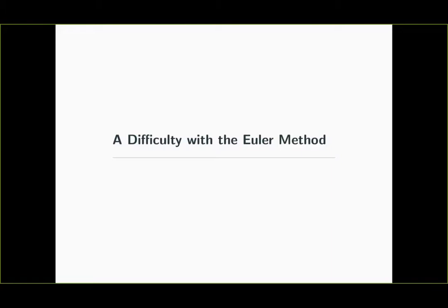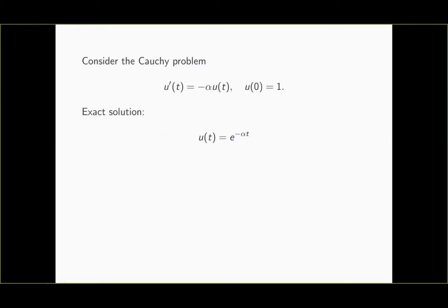However, in this video we're going to take a look at another model problem which looks again very simple, but where the Euler method actually performs rather badly. Let us suppose we have the Cauchy problem u'(t) = -α·u(t) with initial condition u(0) = 1, where α is some positive constant. That is a very simple model problem, and we already know the exact solution, namely u(t) = e^(-αt).